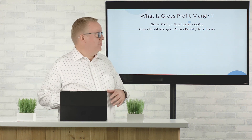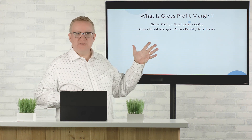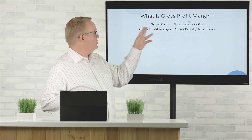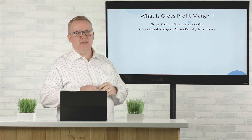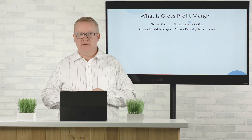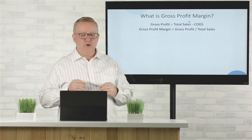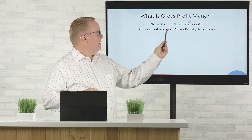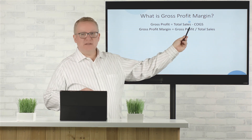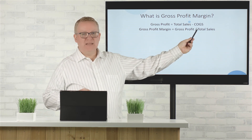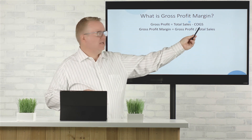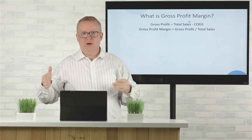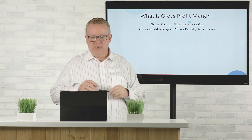There are two formulas that really help us arrive at gross profit margin. The first one is we want to calculate our gross profits. Gross profit we get simply by taking our total sales minus our cost of goods sold over that period of time.